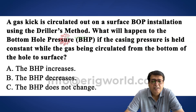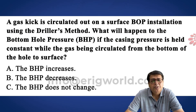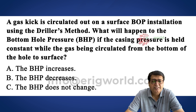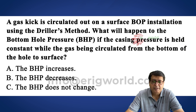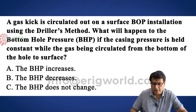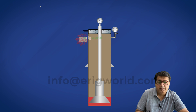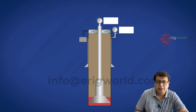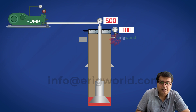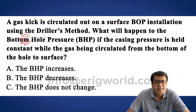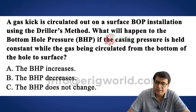The question says that a gas kick is circulated on a surface BOP installation using the driller's method. What will happen to the bottom hole pressure if casing pressure is held constant while the gas is circulated from bottom to surface? Let us draw a well here — this is the influx. After shut-in on a gas kick, let me give some numbers: casing pressure reads 700, SIDP is 500.